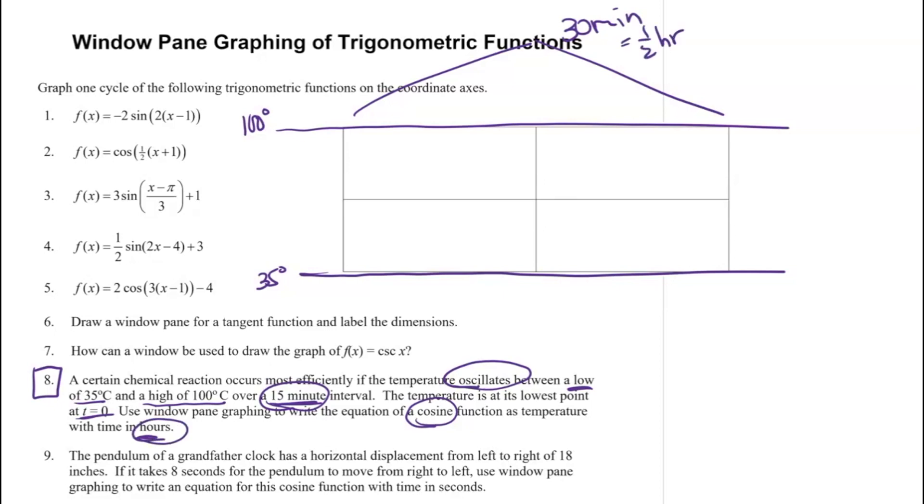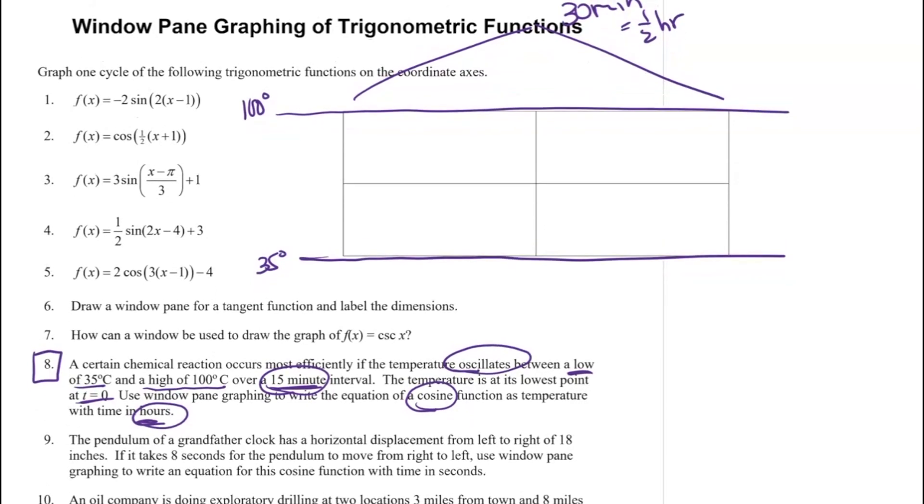If you go back and notice, we want this in hours, so I'm going to think about that as half an hour. The next thing I notice is that at time equal to 0, it's at its lowest point. So I'm going to start right there and draw a cosine curve with time equal to 0 at its lowest point. I'm going to go up and then down.